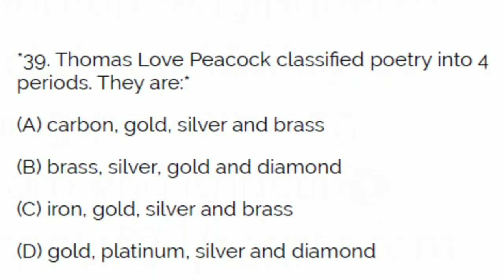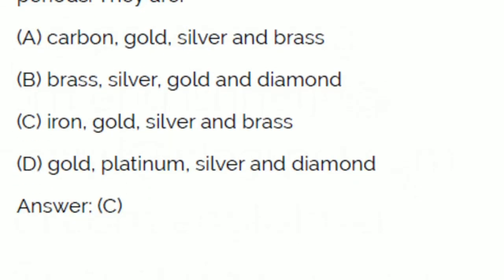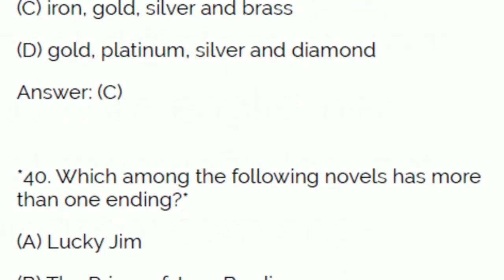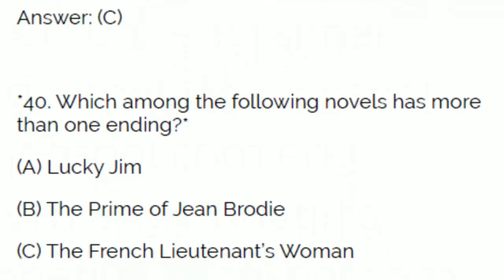Thomas Love Peacock classified poetry into four periods. The options are: A: Carbon, Gold, Silver, Brass; B: Brass, Silver, Gold, Diamond; C: Iron, Gold, Silver, Brass; or D: Gold, Platinum, Silver, Diamond. Your answer is C — Iron, Gold, Silver, and Brass.